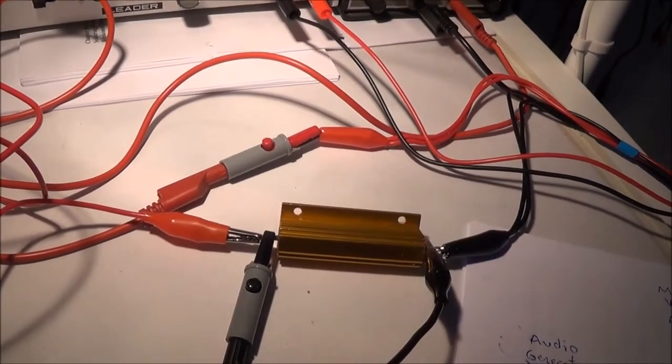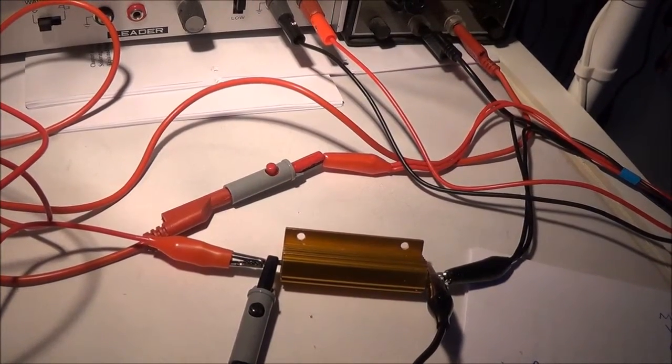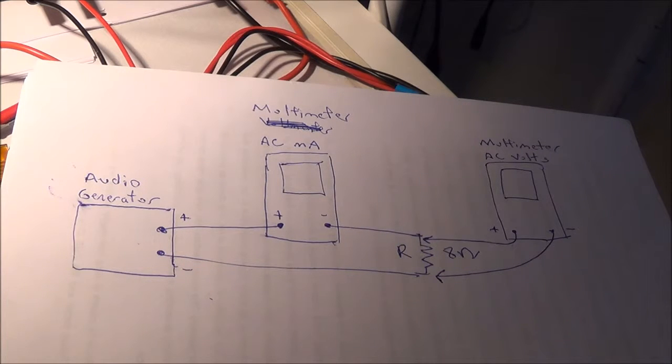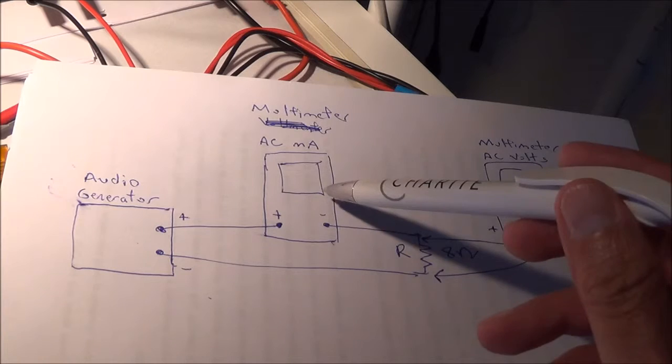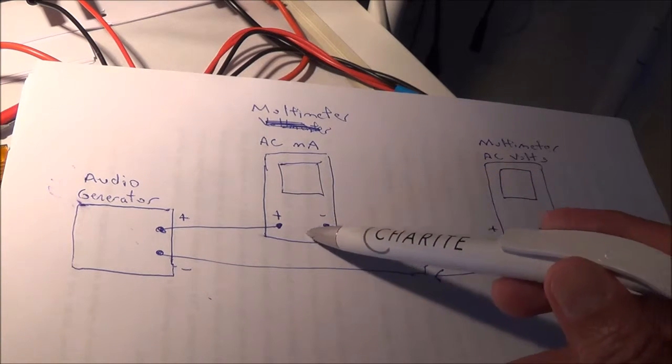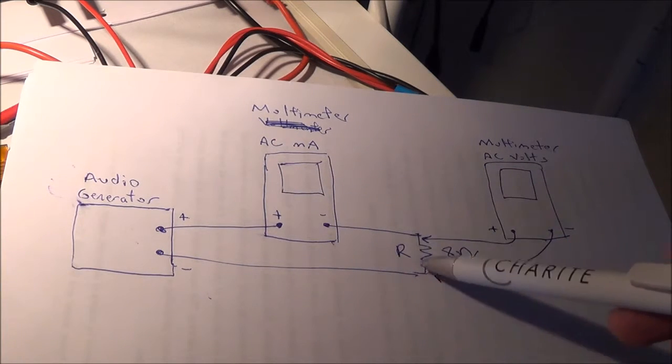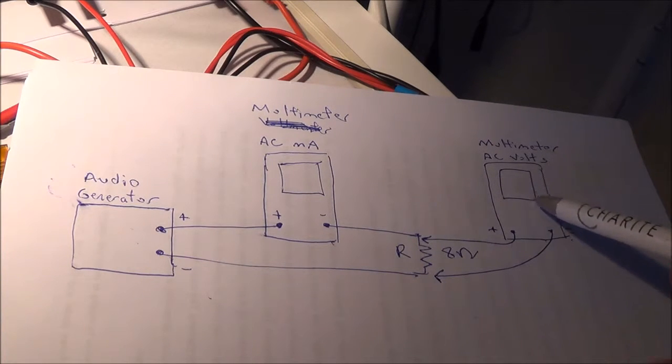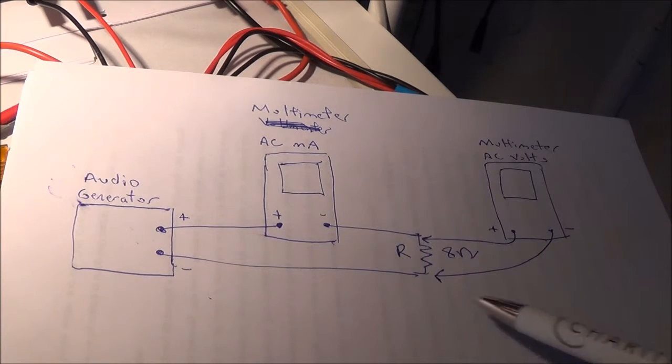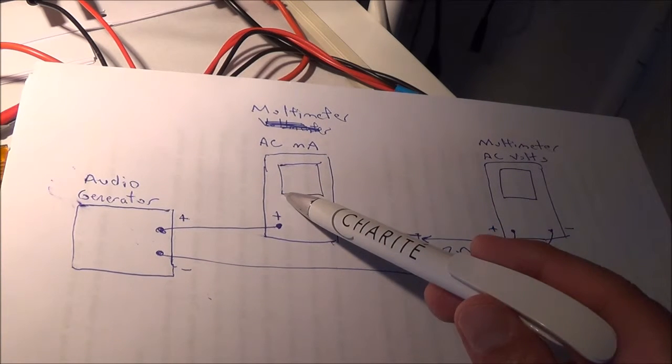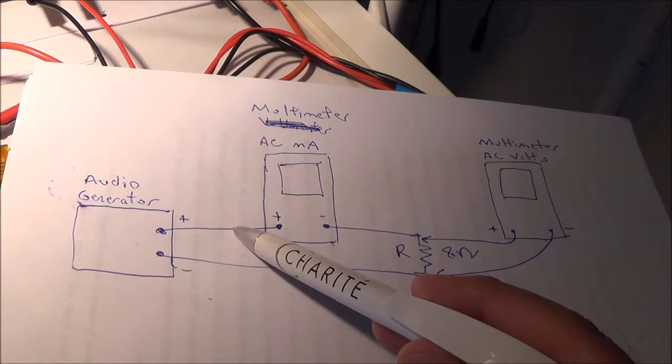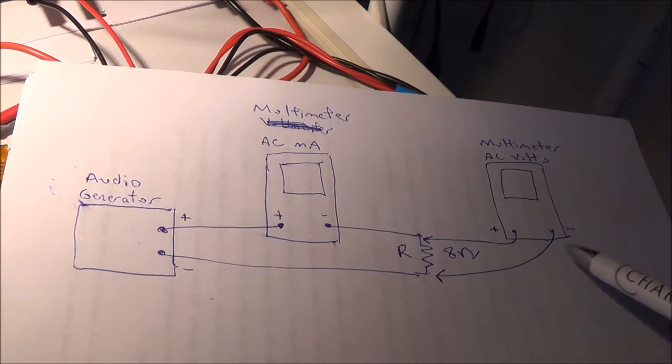Here's a primitive sketch I made. You need four things: the audio generator, the multimeter measuring current (AC amperes), your resistor, and another multimeter to measure AC volts. I have the AC ammeter in series because the current has to flow through it to get any results, which doesn't have to happen with the voltmeter.